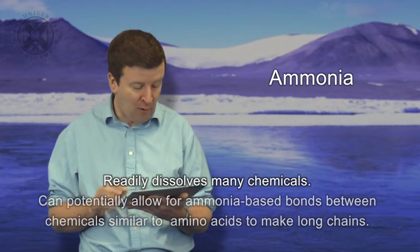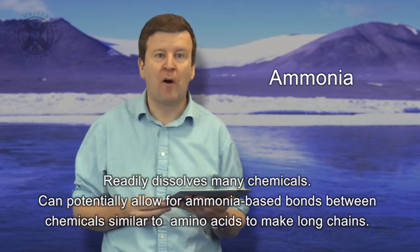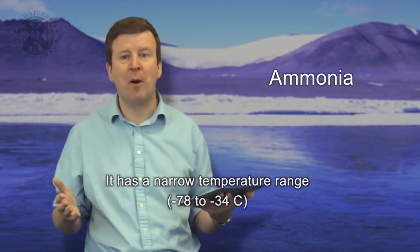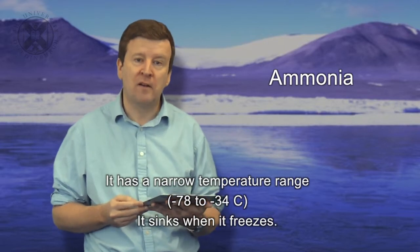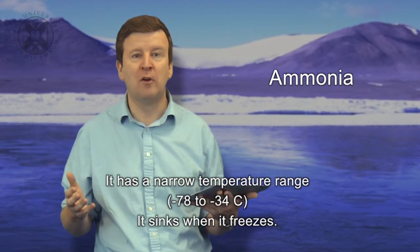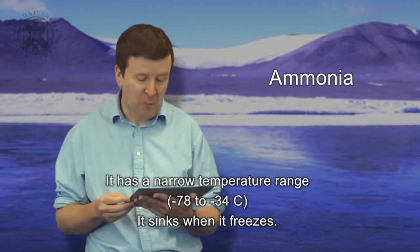What about other alternatives? One alternative that has been favoured by science fiction writers and even scientists is ammonia. Ammonia is interesting because at low temperatures it also readily dissolves many chemicals, and it could potentially allow for ammonia-based bonds between chemicals similar to those in amino acids. Some people have proposed primitive protein chains made from ammonia-based chemical reactions. Problems with ammonia are that it has a very narrow temperature range — it's only liquid from minus 78 to minus 34 degrees. But perhaps that's not a problem on a planet where there are large surfaces meeting those temperature ranges. Also, it sinks when it freezes, meaning that bodies of liquid ammonia would freeze through completely. But how do we know there aren't life forms that adapt to surviving in frozen ammonia and thawing out when it melts again? Of course, these are speculations that we can't address.